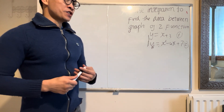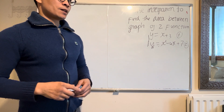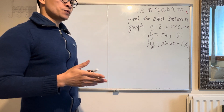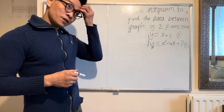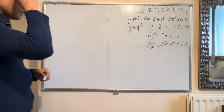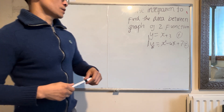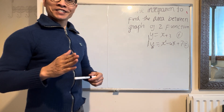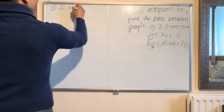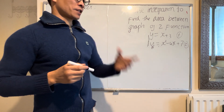To solve this question you have to sketch the graph of the two functions, because the graph will show you the area you have to find. But first, you have to find where graph one and graph two intersect.